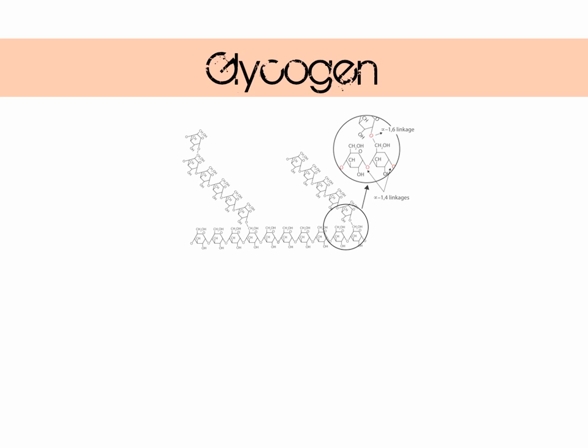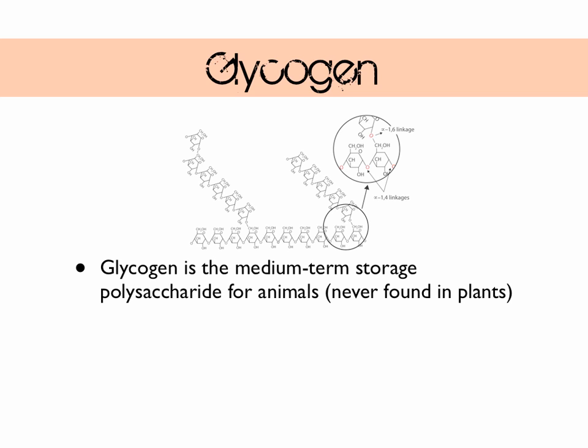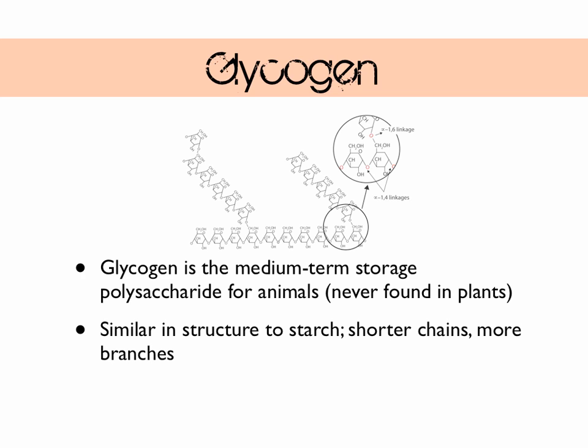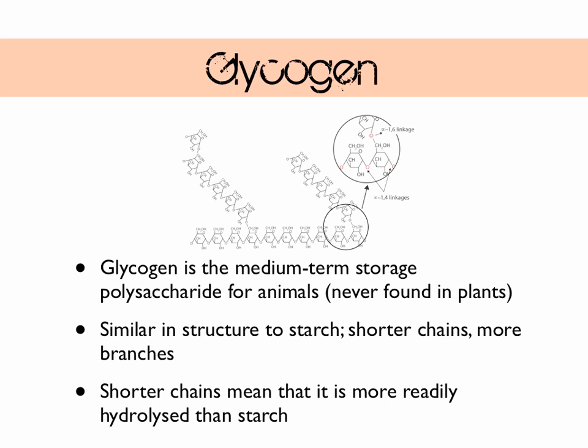Glycogen is the medium term storage polysaccharide for animals - it's never found in plants. Sometimes people call glycogen 'animal starch' as it does pretty much the same job. The structure of glycogen is very similar to starch with branched and straight regions, but chains are much shorter and it's much more branched. More branching means more ends, and each end is where an enzyme can break off an alpha glucose, meaning it's more readily hydrolysed than starch.